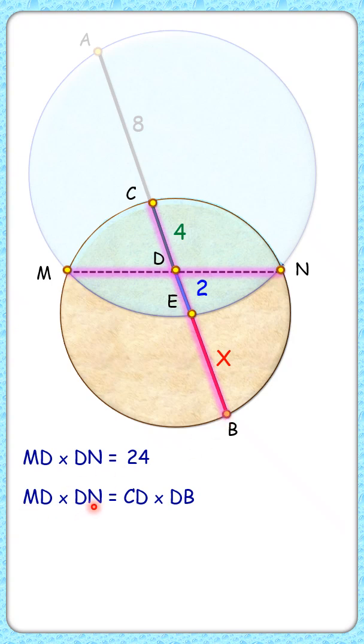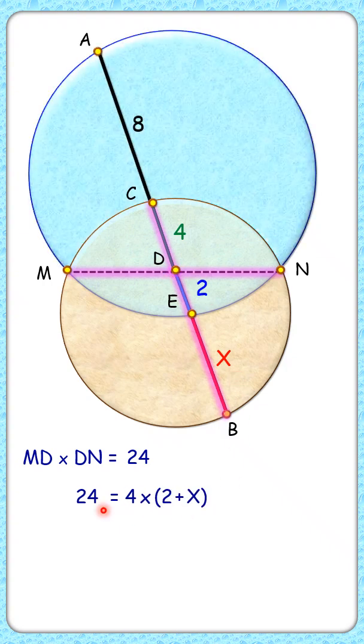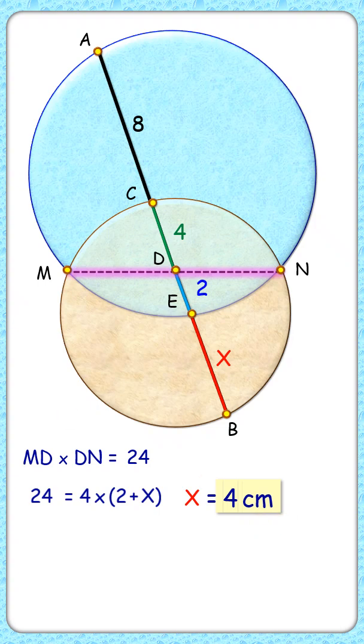Putting the values here, MD times DN is 24, CD is 4, and DB is 2 plus x. Solving it, we get the value of x as 4 centimeters, and that's our answer.